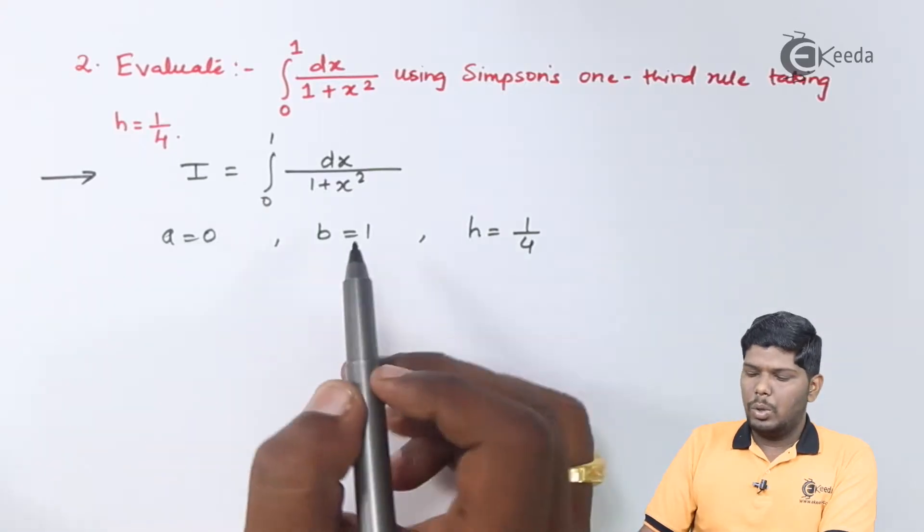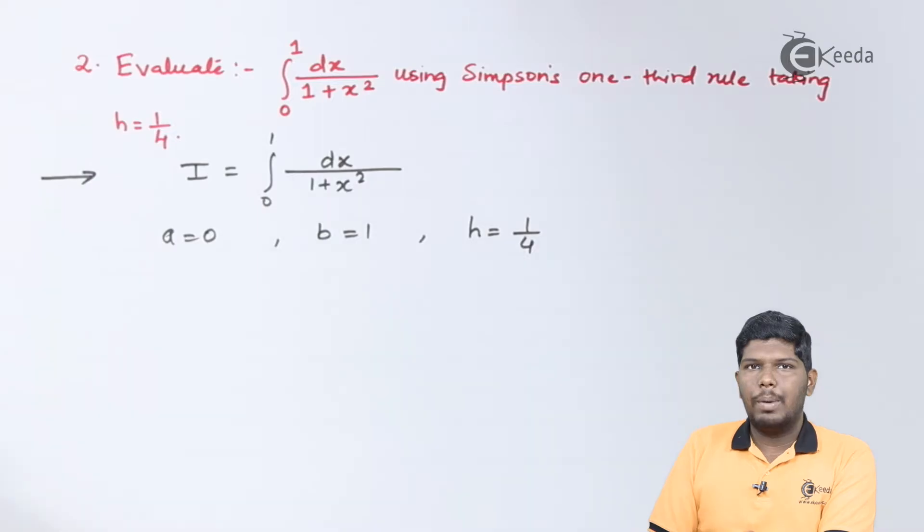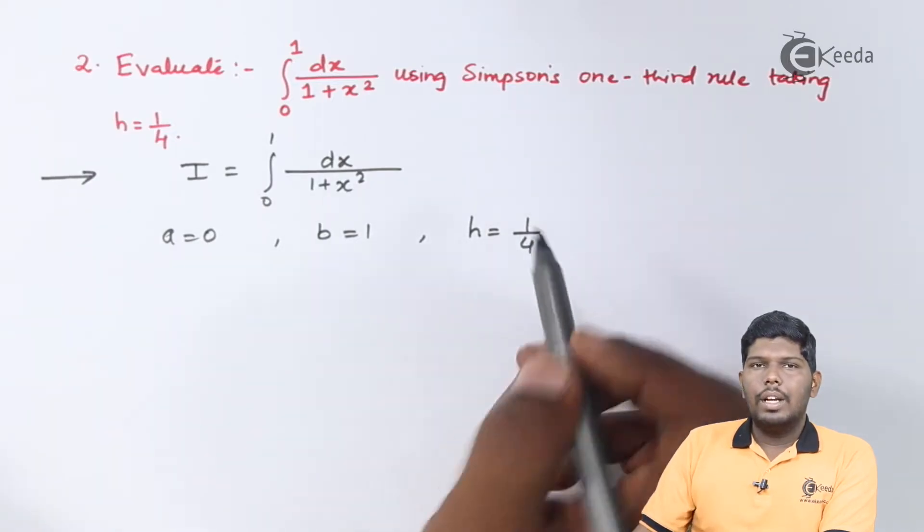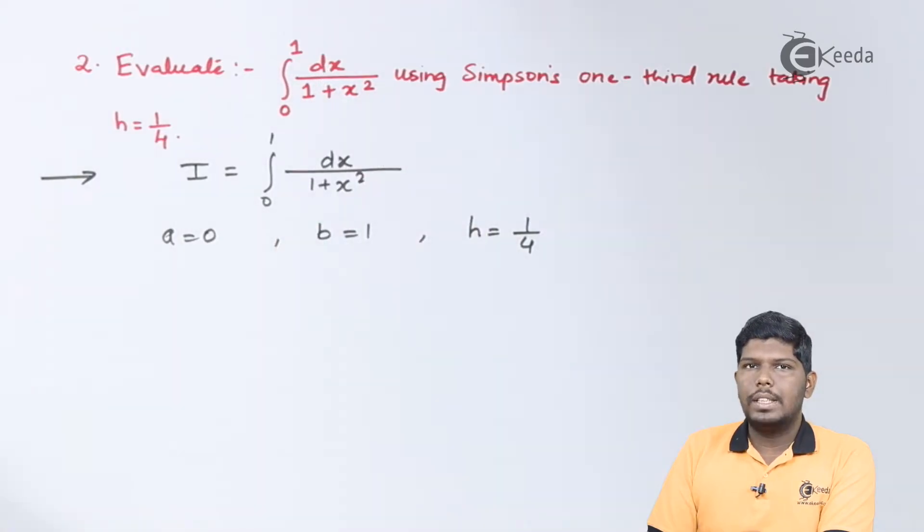Here the lower limit a is equal to 0, the upper limit b is equal to 1 and h is given as 1 by 4. Once h is given we can make the table of x and y where y will be the given function 1 upon 1 plus x square.